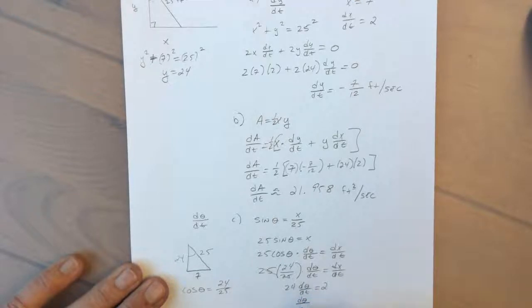So d theta/dt is equal to 1/12, 2 divided by 24, and our units here would be radians per second.